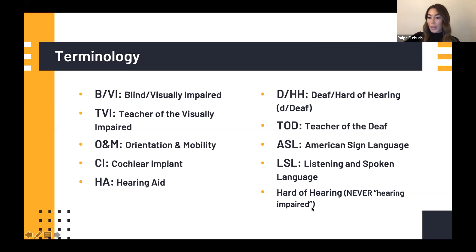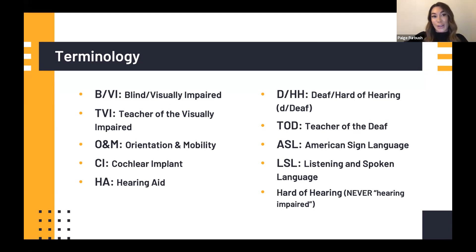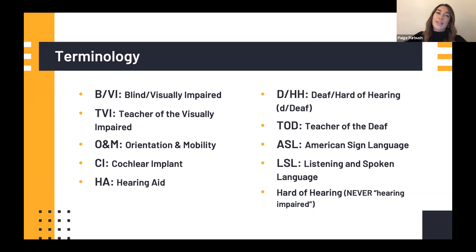Before we start, I want to point out that we do not use the phrase 'hearing impaired' — we always say 'hard of hearing.' It's confusing because educational law and research still use 'hearing impaired,' but individuals in the deaf community consider that term a slur and it can be very offensive. There are some adults who do self-identify as hearing impaired, which is fine, but to play it safe, try not to use it yourself. You can always ask what they prefer and how they identify.